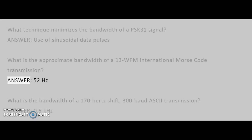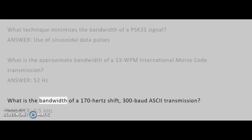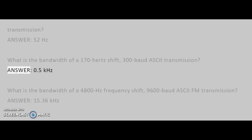Answer: 52 Hz. What is the bandwidth of a 170 Hz shift, 300 baud ASCII transmission? Answer: 0.5 kHz.